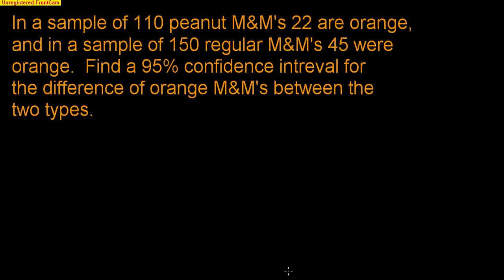Now let's look at a full problem using a confidence interval. In a sample of 110 peanut M&Ms, 22 are orange. In a sample of 150 regular M&Ms, 45 are orange. Find a 95% confidence interval for the difference in the proportion of orange M&Ms between the two types. First, check conditions: both must be random samples; 110 and 150 must be less than 10% of their populations; we need more than 10 successes and failures — 22 orange peanut M&Ms and 45 orange regular M&Ms both satisfy this. The fourth condition: the two samples must be independent of each other, meaning the outcome of a peanut M&M cannot affect the regular M&M.